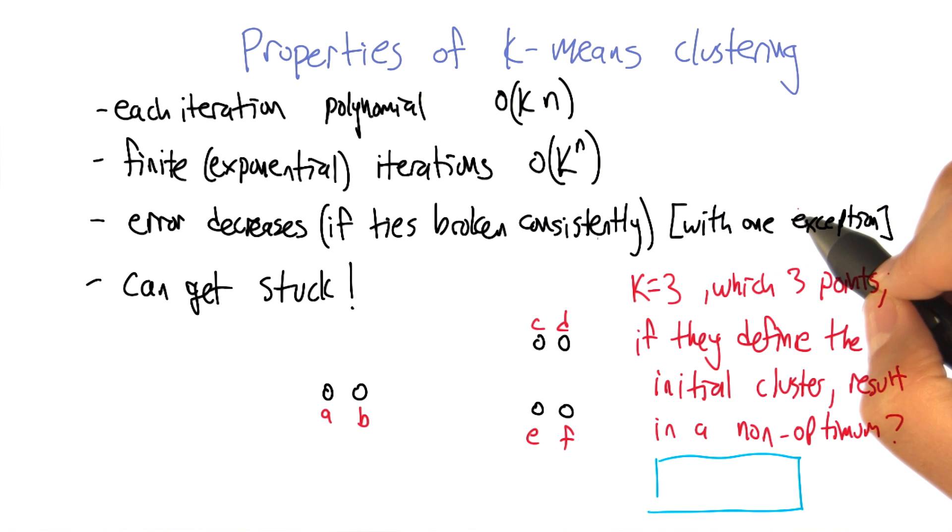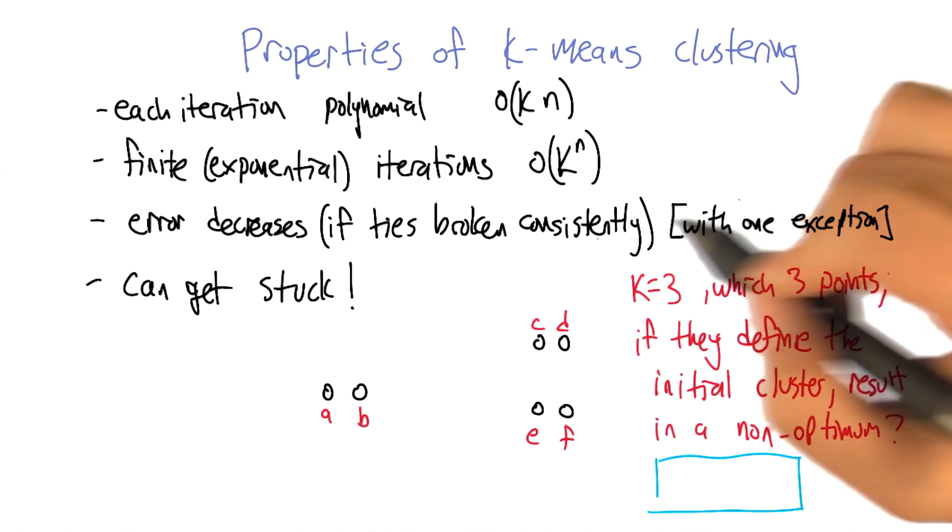But that can only happen once, because then the clusters are going to get assigned according to the consistent tie breaking rule, and then the next time through we're going to see that we've converged.